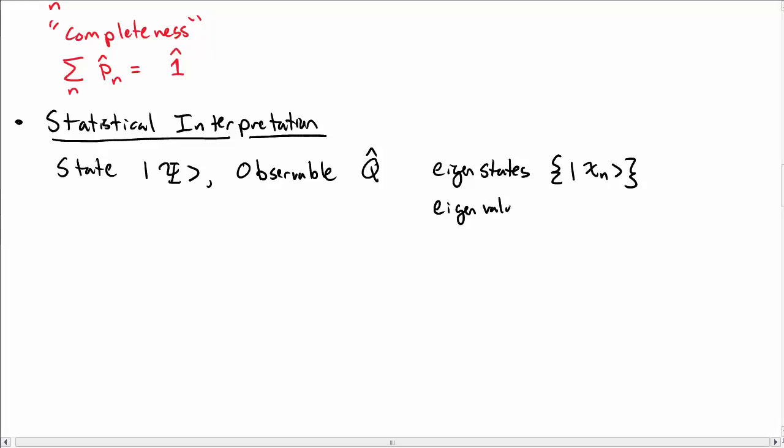And those eigenstates have corresponding eigenvalues, q n. By the way, these eigenvalues are sometimes called the spectrum of q. In particular, if I operate q on chi n, I get back, of course, the eigenvalue times chi n. So that's what I mean by eigenstates and eigenvalues here.